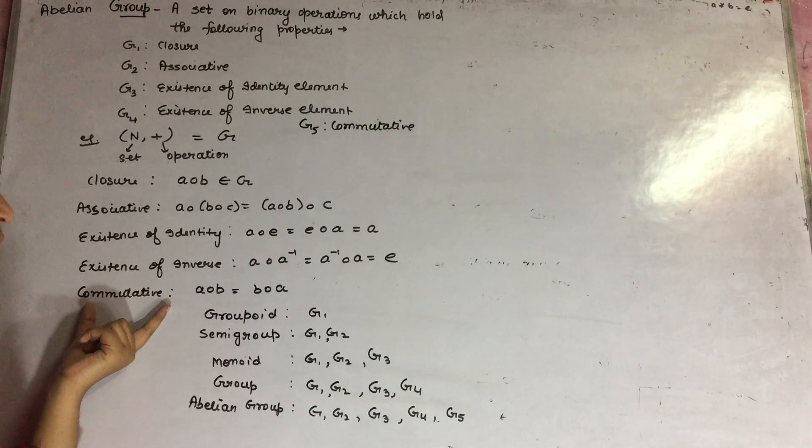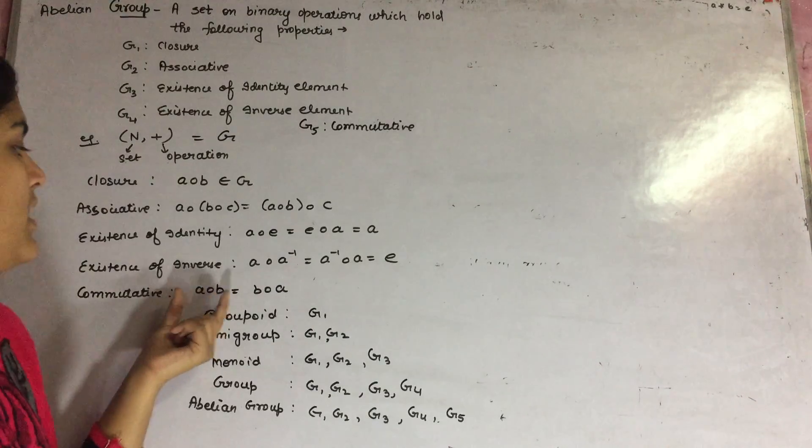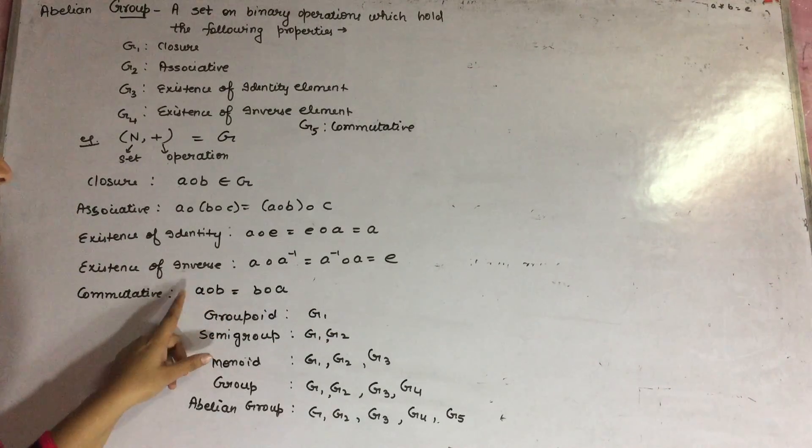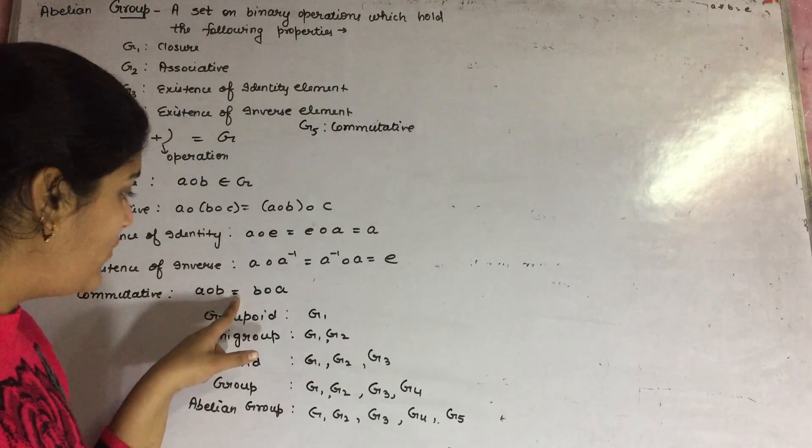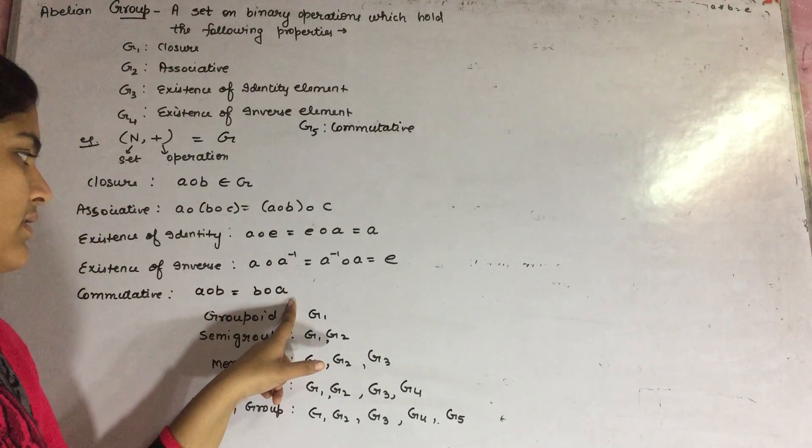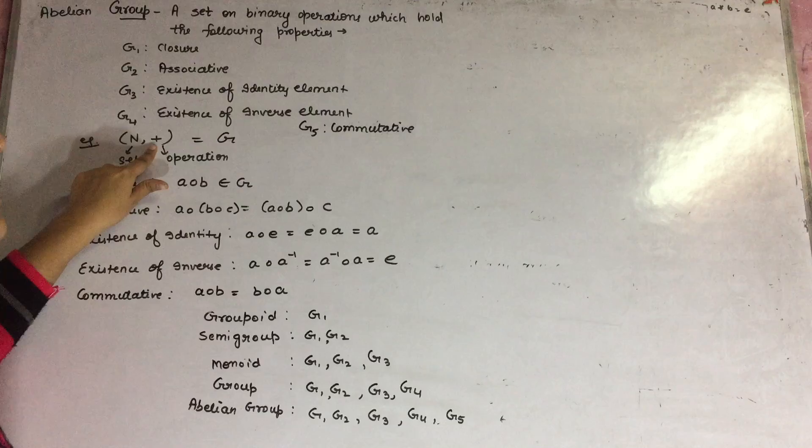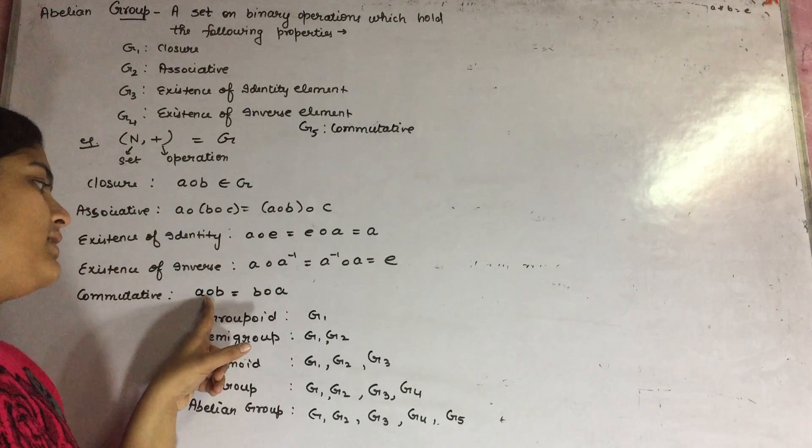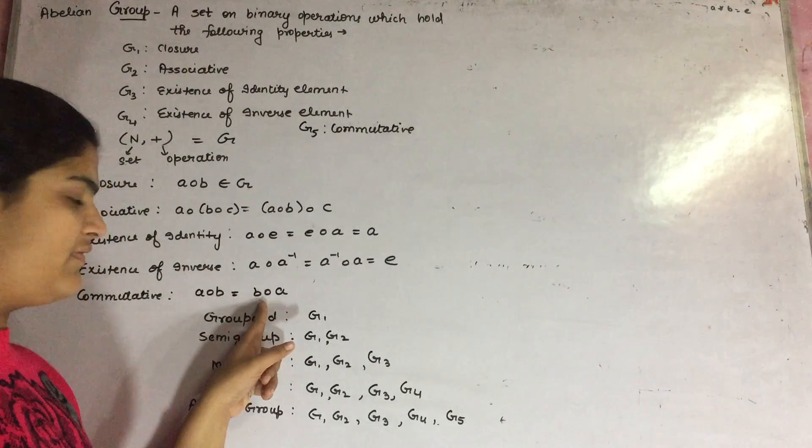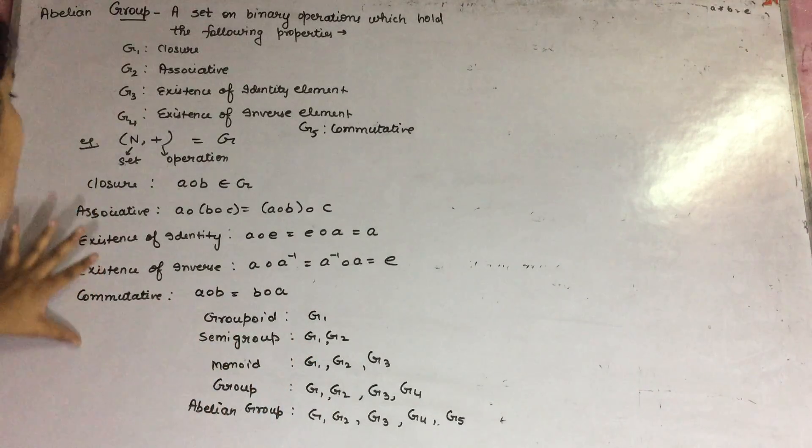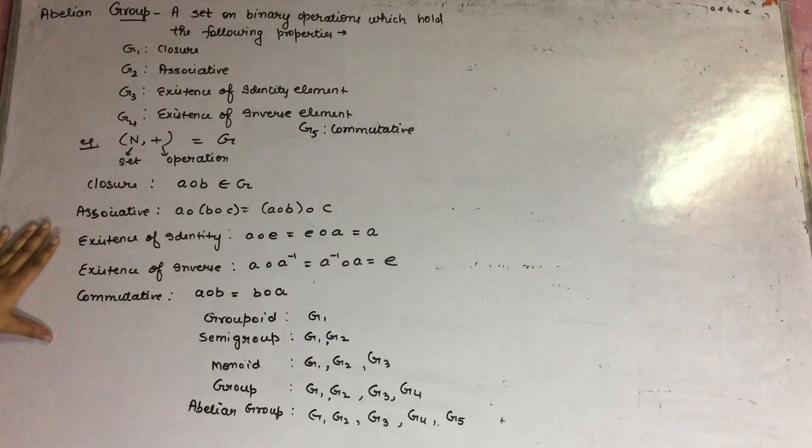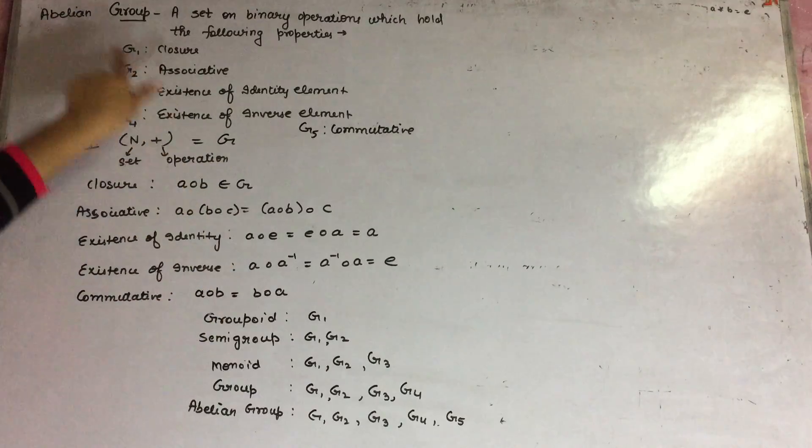Now we are talking about the commutative property. If the operation between A and B equals to B and A, like if we're taking the example of addition, if A plus B is there then it should have B plus A. Then only if it comprises all these five properties from G1 to G5, then only a group is said to be an Abelian group.